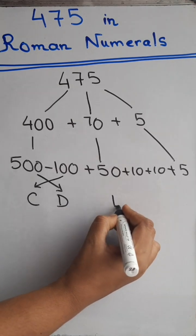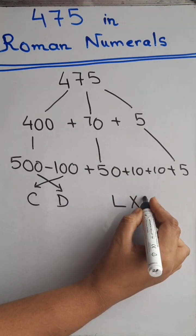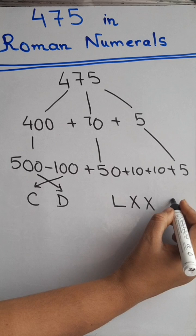For 50, the Roman numeral is L. For 10 is X. And for 5 is V.